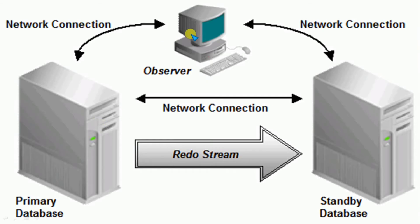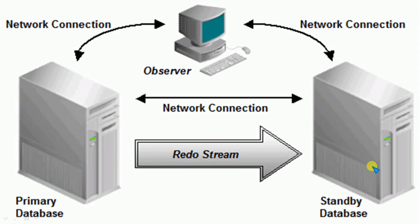Taking another example: if there is a flood or natural disaster happening at one location, all applications using the primary database server will be down. With a Data Guard setup, we will switch the role, because whatever data is available on the primary database is always reflected on the standby database — the redo stream is always passing from primary to standby. So if a disaster happens at the primary location, we change the primary role to standby and the standby to primary.